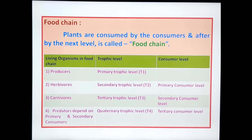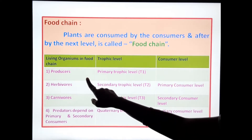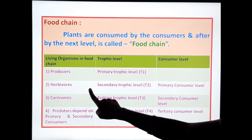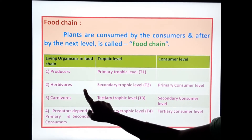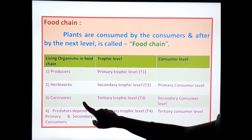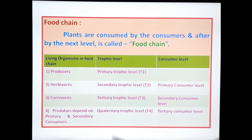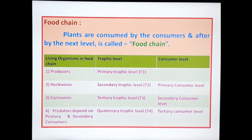In this table, we see living organisms in the food chain, trophic level, and consumer level. Living organisms are producers — meaning plants and trees — and herbivores, which are animals that eat plants. Grazing animals such as grasshoppers and rabbits are known as herbivores. Carnivores depend upon herbivores and producers for their nutrition. Predators depend upon primary and secondary consumers. These are the organisms having trophic levels.